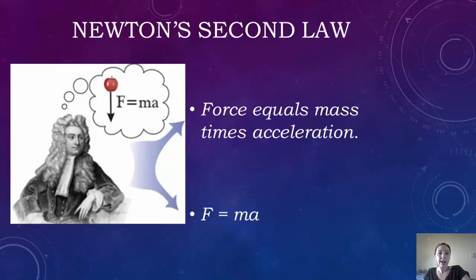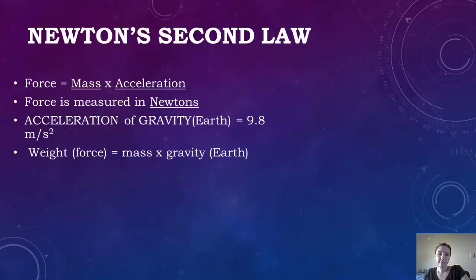Okay, so now we're going to look at Newton's second law of motion. It can be described as force equals mass times acceleration, or in a formula form, F equals m times a. Force is equal to mass times acceleration. The force is measured in Newtons. It's important to know that the acceleration of gravity on Earth is equal to 9.8 meters per second squared.